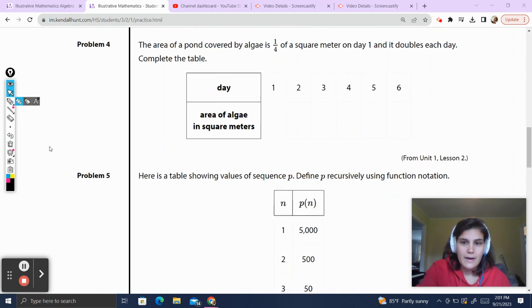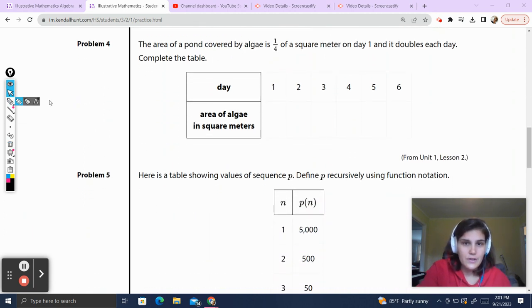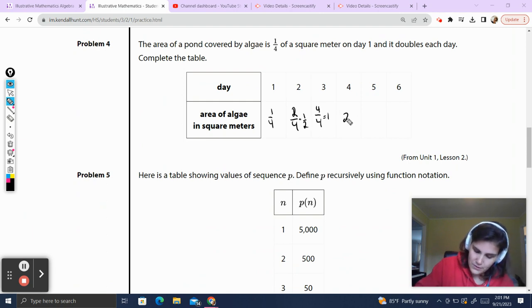The area of a pond covered by algae is 1/4 a square meter on day 1, and it doubles each day. So on day 1, it is 1/4 a square meter. On day 2, it doubles. So it's going to be 2/4, or 1/2. On day 3, it's going to be 4/4, which is equal to 1. I'm going to simplify. Day 4, it's going to be 2. Day 5, it's going to be 4. And day 6, it's going to be 8. Complete the table. I'm done. Let's go on to the next one.